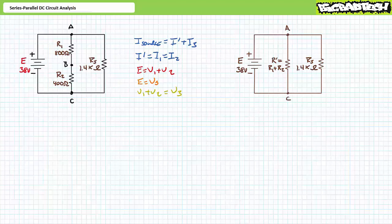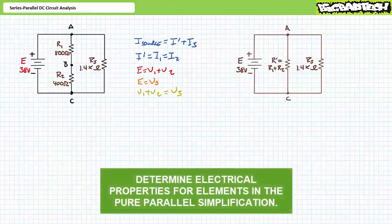This is a clear indicator that we can apply pure parallel circuit properties to this system. Voltage is a two-point measurement — the series combination of R1 and R2 between A and C is in parallel with R3, also between A and C. As an exercise to the viewer, I invite you to solve for V single prime, V3, source current, I single prime, and I3 for the parallel simplification only. Once we've got these values, we'll map these properties back to our original series-parallel circuit.